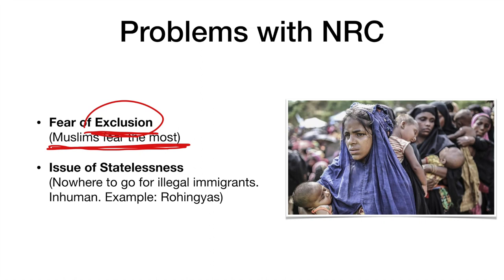The other major problem is the issue of statelessness, which is a very major problem compared to the fear of exclusion. If the NRC finally comes out with a list of illegal immigrants, we do not know if Bangladesh will accept them as their citizens. If they are not citizens of India, they must be citizens of Bangladesh since they came from there — but if Bangladesh does not accept them, they will be stateless and cannot go anywhere. Even in the example of Rohingyas, Myanmar sent them away saying they are not citizens, and these poor migrants did not know where to go — many of them died. On humanitarian grounds, we should look at these people carefully. Let us see how the government will tackle these issues.